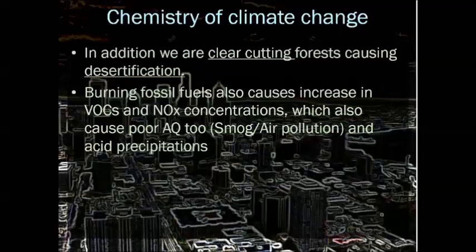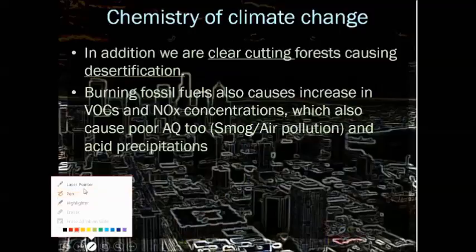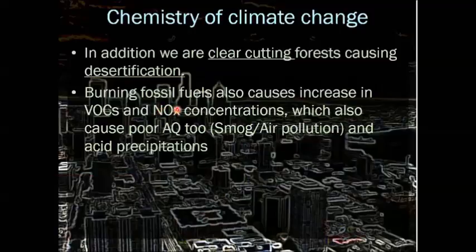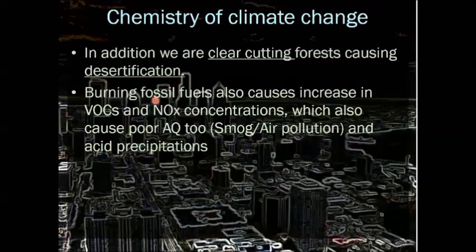When we burn fossil fuels, we see an increase in volatile organic compounds (VOCs) and also in nitrogen concentrations. The NOx here refers to nitrogen compounds like NO₂ and NO₃ — the x is just a placeholder variable like you'd see in math. Any of those NO compounds can be seen in concentrations in the atmosphere, which also leads to poor air quality like smog, air pollution, and the acid rain we've been talking about. So burning fossil fuels really contributes to disrupting all of those chemical cycles and lots of different aspects of the environment.